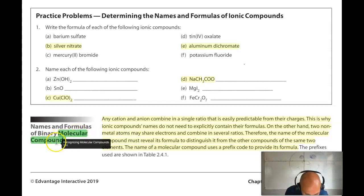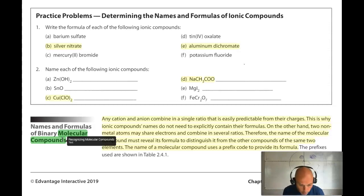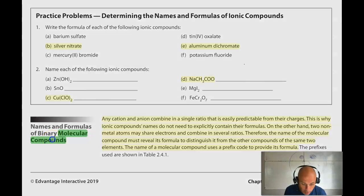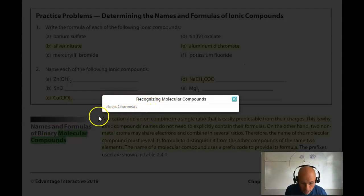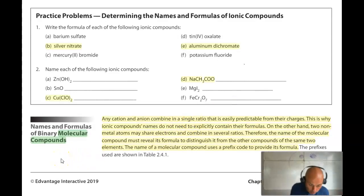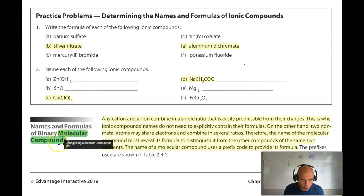We're transitioning from naming and writing formulas of ionic compounds to doing the same for molecular compounds, which is actually a bit easier. Ionic compounds are a metal and a nonmetal negative ion, or a metal and a polyatomic negative ion. Molecular compounds, on the other hand, always contain two nonmetal atoms, and they're not ions — they remain relatively neutral. Molecular compounds are recognizable because both elements are nonmetals, and if the first element is a nonmetal, so will the second be.